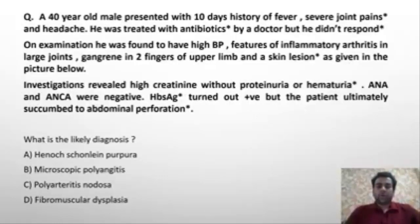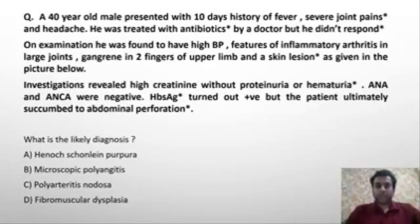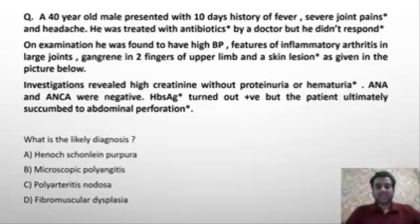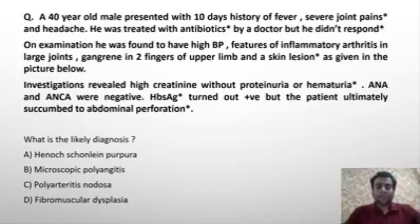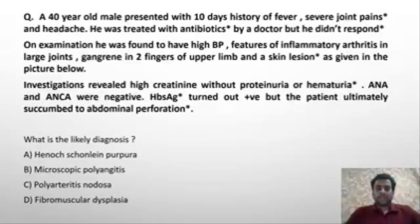There was also a skin lesion shown in the photograph. Investigations revealed high creatinine but no proteinuria or hematuria. ANA and ANCA were negative. Hepatitis B surface antigen was positive, and the patient ultimately succumbed to abdominal perforation. The question asked: is it Henoch-Schönlein purpura, microscopic polyangiitis, polyarteritis nodosa, or fibromuscular dysplasia?